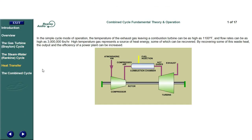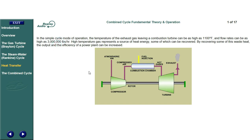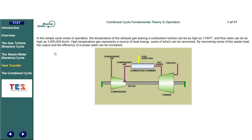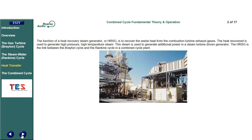In the simple cycle mode of operation, the temperature of the exhaust gas leaving a combustion turbine can be as high as 1,100 degrees Fahrenheit, and flow rates can be as high as 3 million pounds per hour. High temperature gas represents a source of heat energy, some of which can be recovered. By recovering some of this waste heat, the output and the efficiency of a power plant can be increased. The function of a heat recovery steam generator, or HRSG, is to recover the waste heat from the combustion turbine exhaust gases.